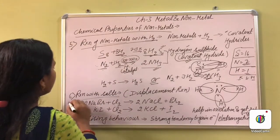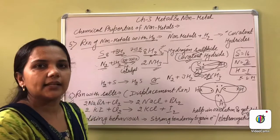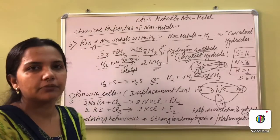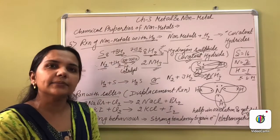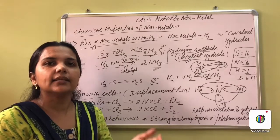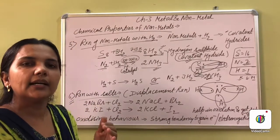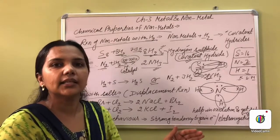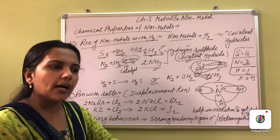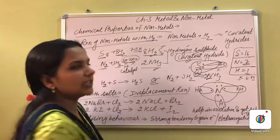Now the next property is the reaction of non-metals with salts. When any non-metal reacts with salts, a displacement reaction will occur. In a displacement reaction, a more reactive element displaces a less reactive element from its salt solution. That type of reaction is said to be the displacement reaction.